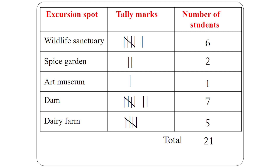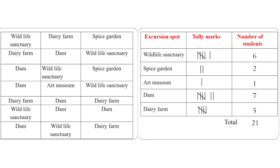Now let us organize the given data by preparing a tally marks table. Draw a table with three columns. In the first column, write the excursion spot. In the second column, write tally marks, and in the third column, write the number of students. In the excursion spot column, write the different spots: Wildlife Sanctuary, Art Museum, Spice Garden, Dam, and Dairy Farm. We need to check the data and put tally marks in the appropriate column, then cross out that particular data so we do not count it again. Continue putting tally marks until we complete all entries. Once the tally marks column is filled, count the number of tallies in column 2 and fill column 3.